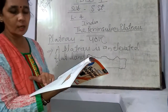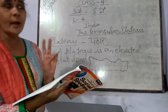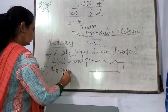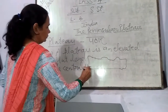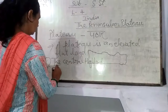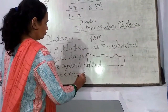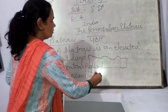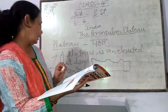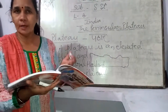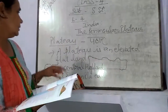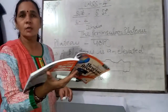This plateau is divided by the Narmada river into two parts. Number one is the Central Highland, and number two is the Deccan Plateau. I will explain these two parts in the next video. The boundary between these two units is formed by the Vindhya Range.